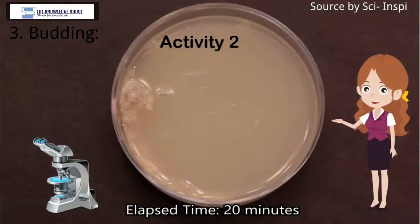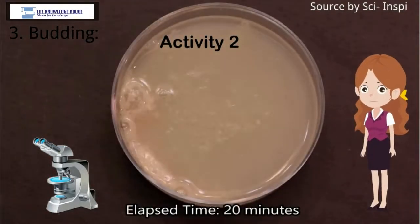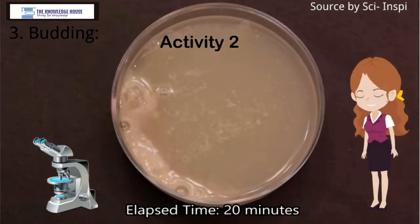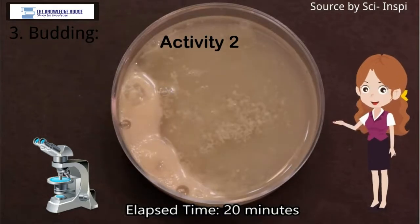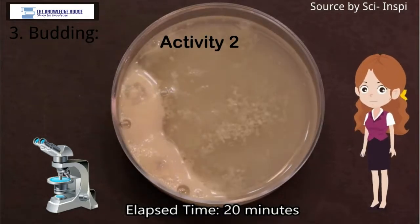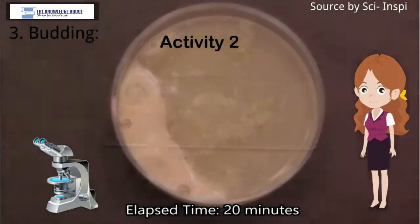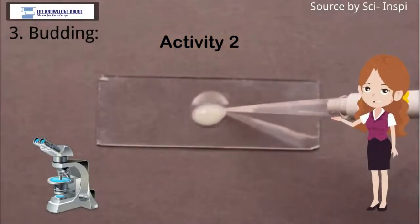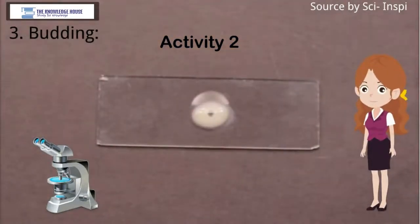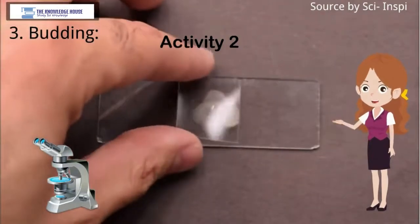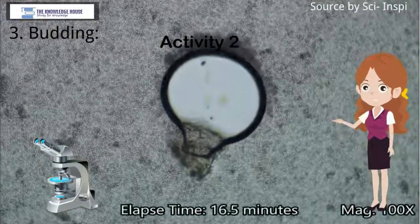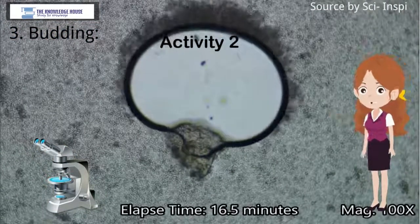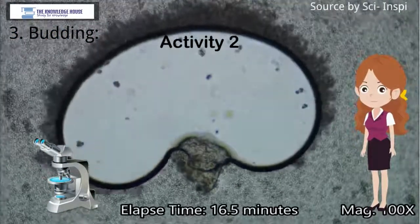Yeast cell produces two daughter nuclei by mitotic division so as to reproduce by budding. This yeast cell is called the parent cell. A small bulge appears on the surface of parent cell. This bulge is actually a bud. One of the two daughter nuclei enters this bud. After sufficient growth, bud separates from the parent cell and starts to live independently as a daughter yeast cell.